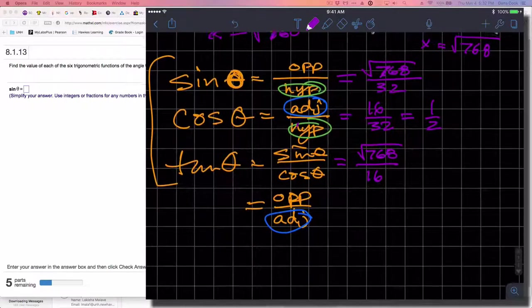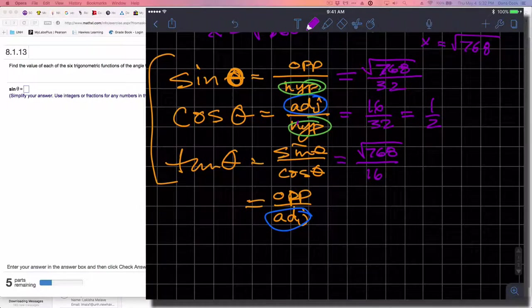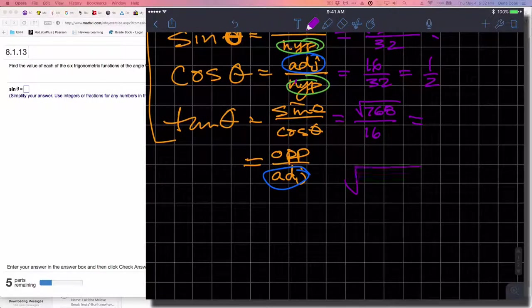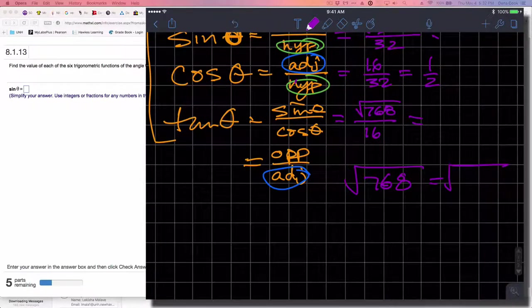Let's simplify the square root of 768 so I can get the simplified answers. 768 can be factored into 4 times 192, which further factors into 4 times 4 times 48.